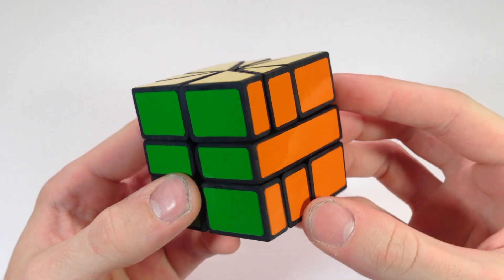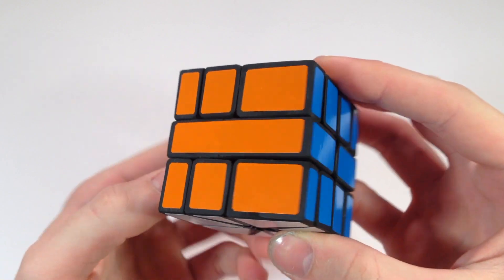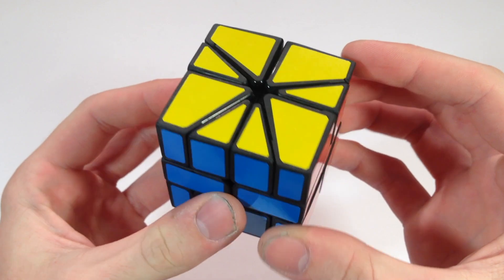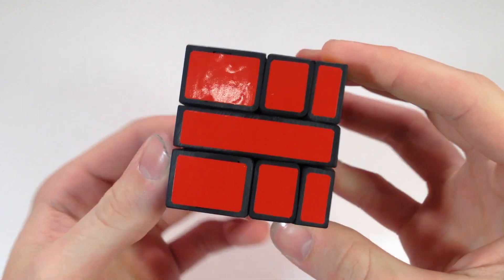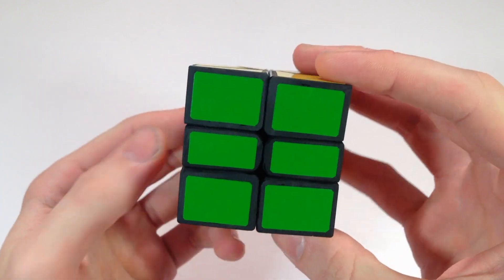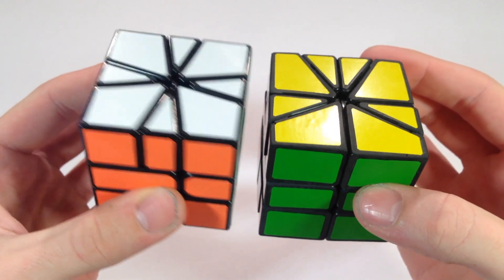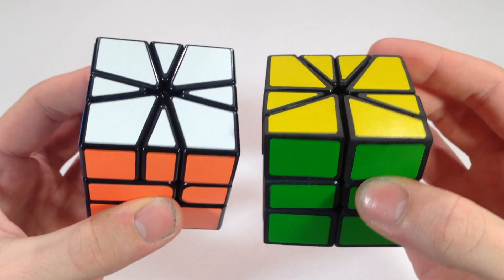Hey everybody, so this is my newest puzzle, and this is something I'm calling the Square 180 for reasons I'll explain in just a little bit. But I think this thing looks really interesting, again obviously another Square 1 mod. Same as the other ones, it was built from a Moyu Wei Long Square 1.